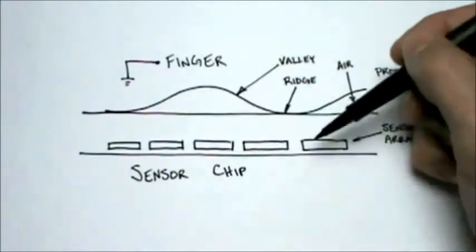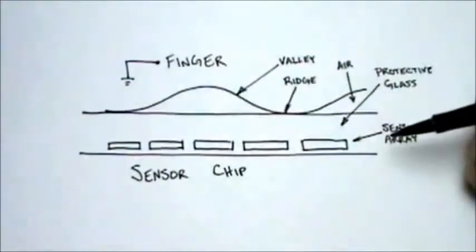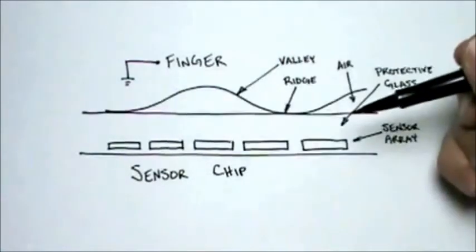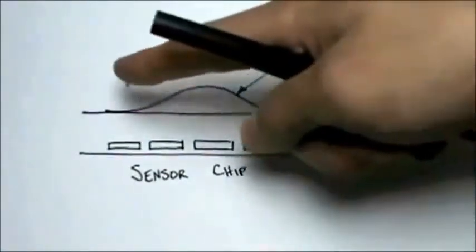On top of the sensor chip is a sensor array, just a bunch of little pieces of metal. On top of the sensor array is a piece of hard protective glass, and on top of the protective glass slides your finger.